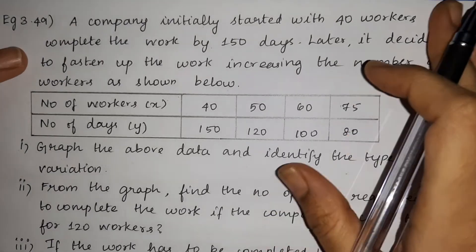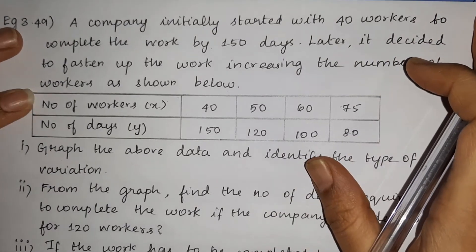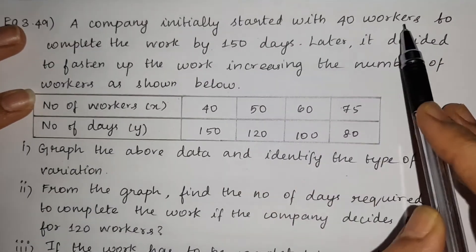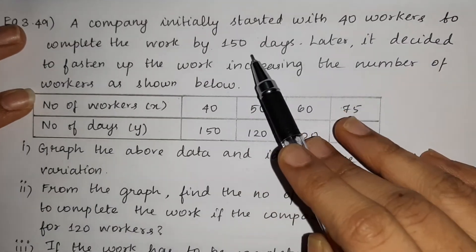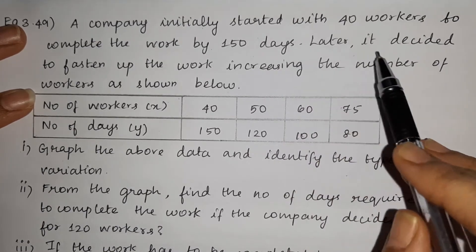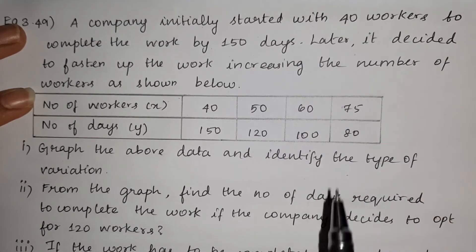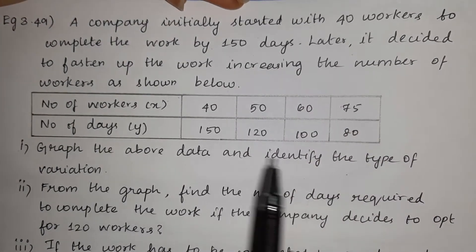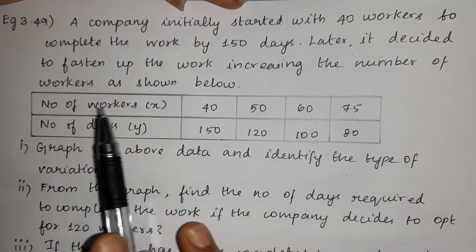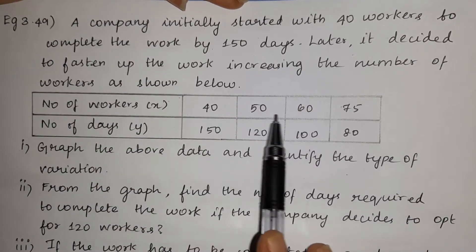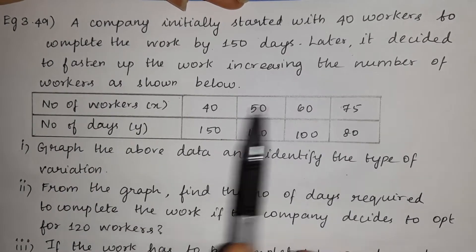The question is: your company initially started with 40 workers to complete a work in 150 days. Later, it decided to fasten up the work by increasing the number of workers as shown below. Number of workers: 40, 50, 60, 75.